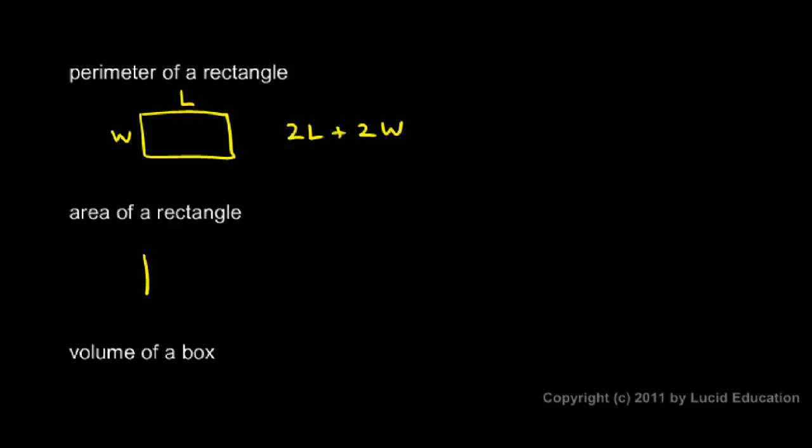Now the area of a rectangle—again, draw a little rectangle. The area means the space or the two-dimensional surface enclosed by the rectangle. So again, let's call it length L and width W. The area of the rectangle is the length times the width, commonly written as LW.